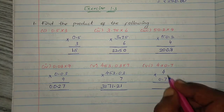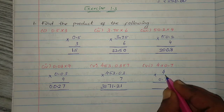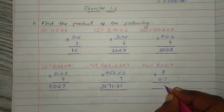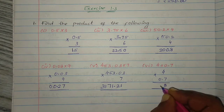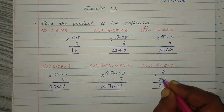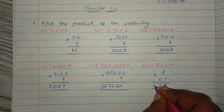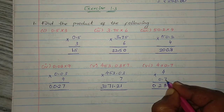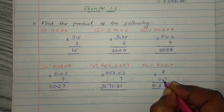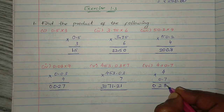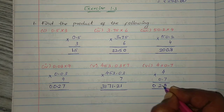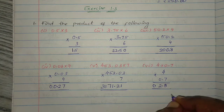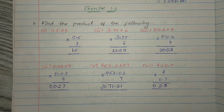4 into 0.7: answer is 28. So 0 upon 0, then we will have 0. Now 7 — 1 digit before decimal point. So 1 digit before decimal point: 2.8.